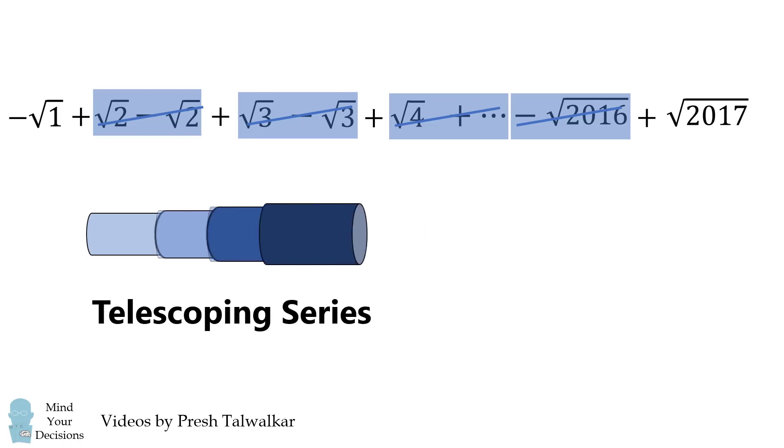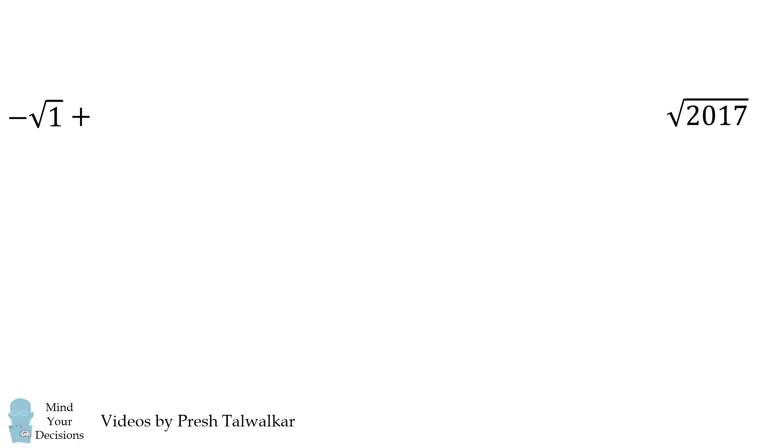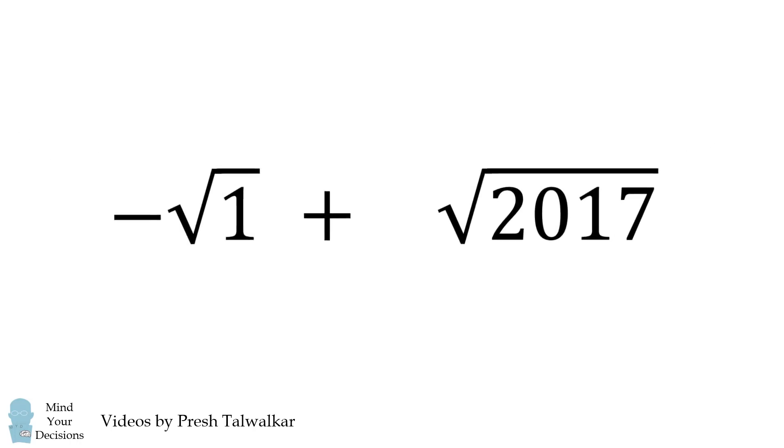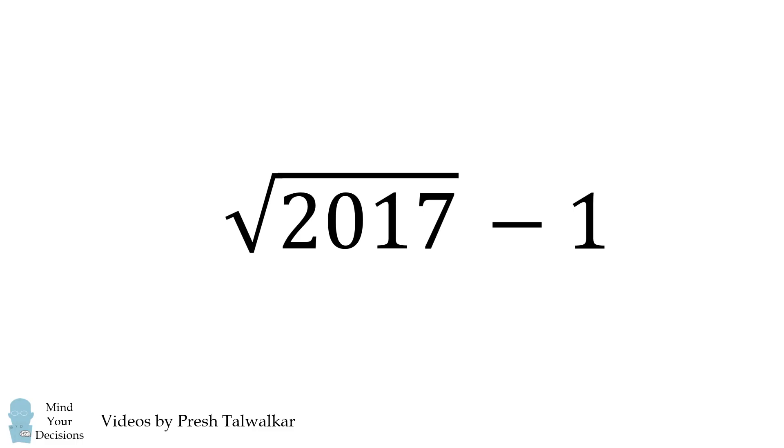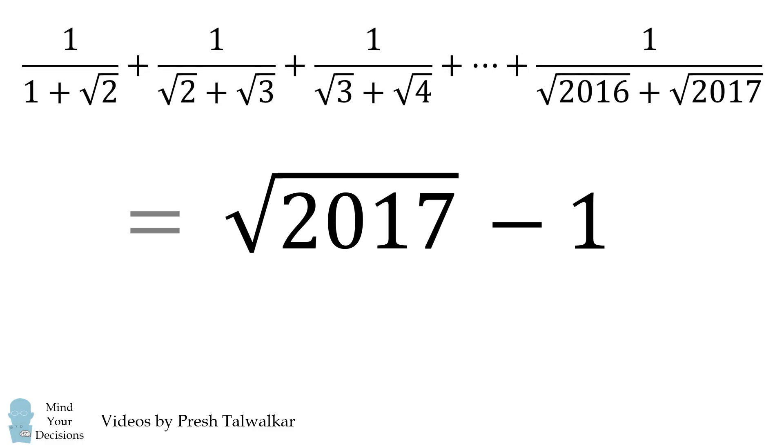When you retract the telescope only the beginning and the end remain. Similarly in this series it'll contract to just the first term and the very last term. And so we simplify once more. Negative square root of 1 will be equal to negative 1 and then we flip the terms. And that's our answer. This series simplifies to be equal to the square root of 2017 minus 1. Amazing!